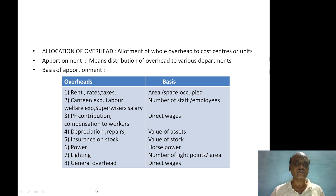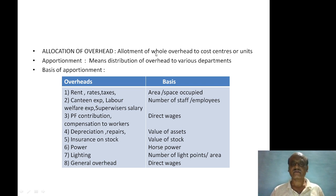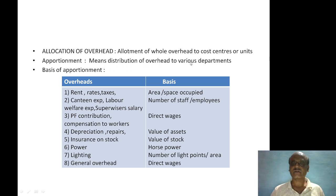Let us see these two terms: allocation and apportionment are often used as one and the same, but slight differences are there between them. Allocation of overhead means allotment or distribution of the whole overhead to a cost centre. Apportionment means distribution of overhead to various departments on a suitable basis.